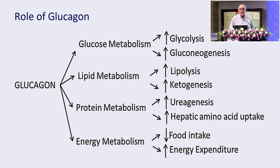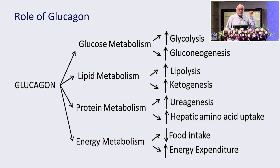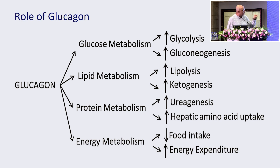But we know glucagon does much more. It has effects on glycolysis and gluconeogenesis, on lipolysis and ketogenesis. Importantly, it has effects on hepatic amino acid uptake, because that hepatic amino acid uptake is what goes back and controls the alpha cells of the pancreas. It also works in food intake and energy expenditure.